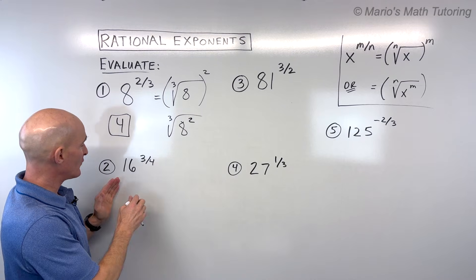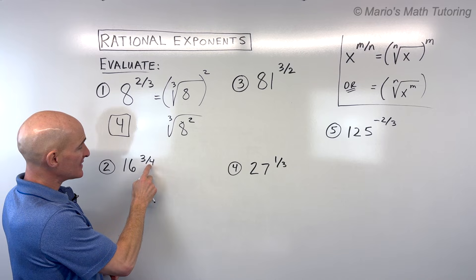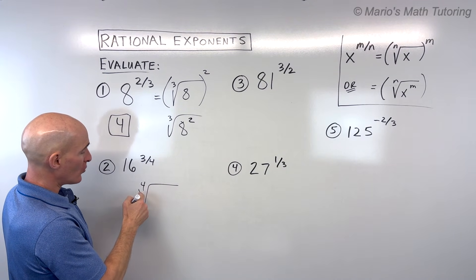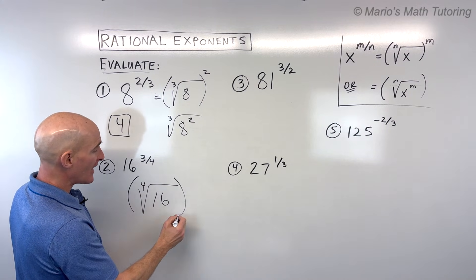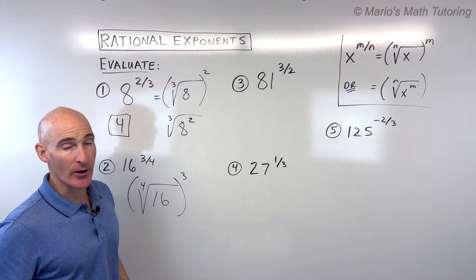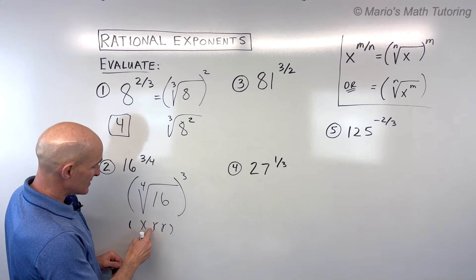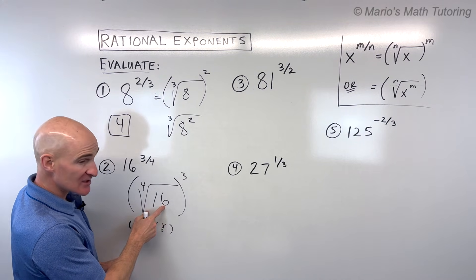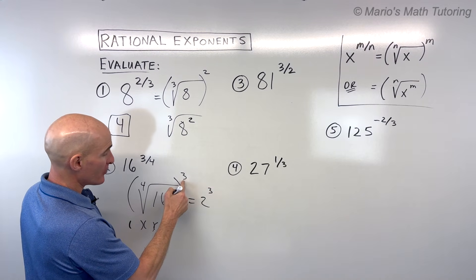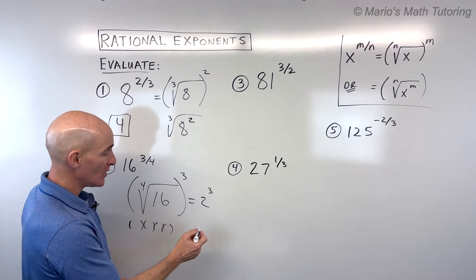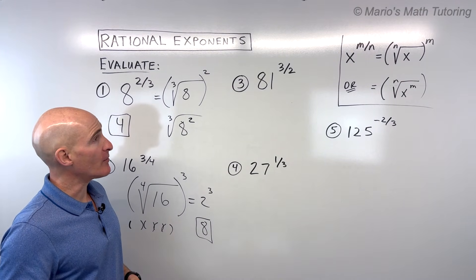For number 2, we've got 16 to the 3 fourths. The denominator is the index or root, so this is saying what's the fourth root of 16. Once we figure that out, we raise it to the third power. What number multiplied four times gives 16? That's 2, so this is 2 to the third power — 2 times 2 times 2 — which gives us 8.